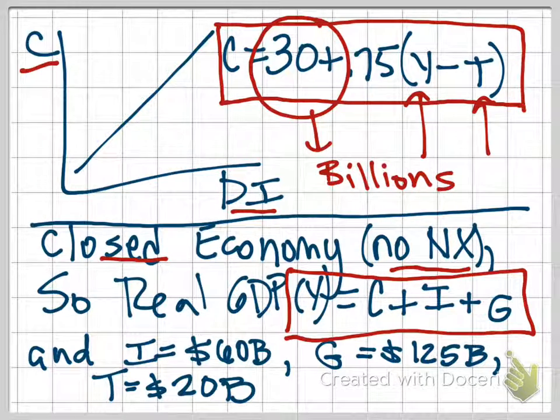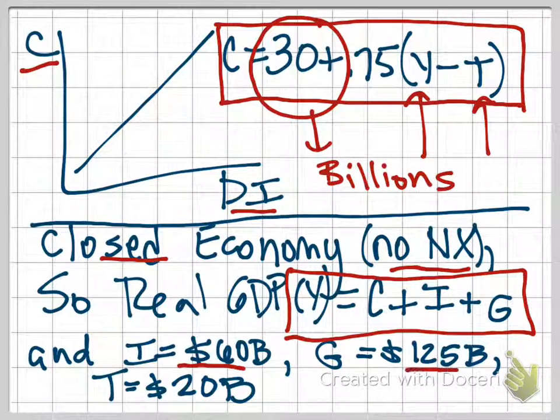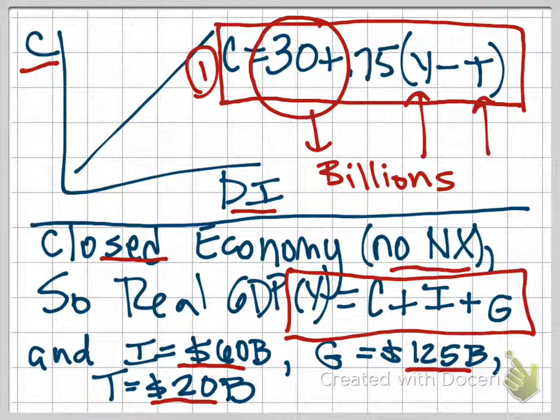The problem then goes on to tell you that currently our level of investment spending is $60 billion, government purchases is $125 billion, and net taxes are $20 billion. We're going to use these three values, plugging them into these two equations, our equation for consumption and our equation for real GDP, and we're going to solve for Y.